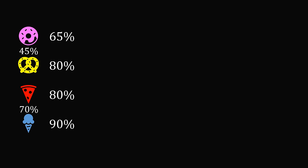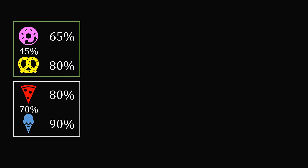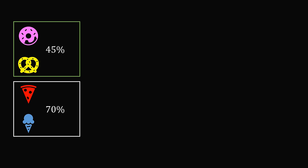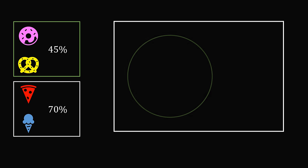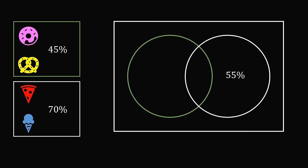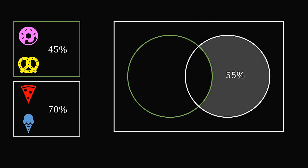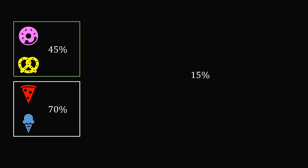Now we can imagine donut-pretzel as one combined food, and pizza-ice cream as another. So 45% ate the first combined item, and 70% ate the second. To find how many ate both, we apply the same calculation again: 45% ate the first item, meaning 55% did not. We put that into the second circle, so we need 70 minus 55, which is 15% of people. So once again, we've figured out that at least 15% ate all four foods.